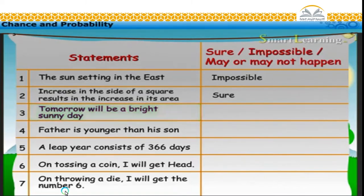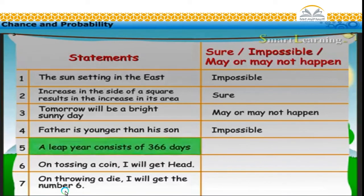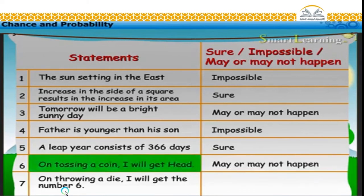Tomorrow will be a bright sunny day. This may or may not happen, as its occurrence depends on the sun. This may or may not happen, because when a coin is tossed, there are two possible outcomes: head or tail.